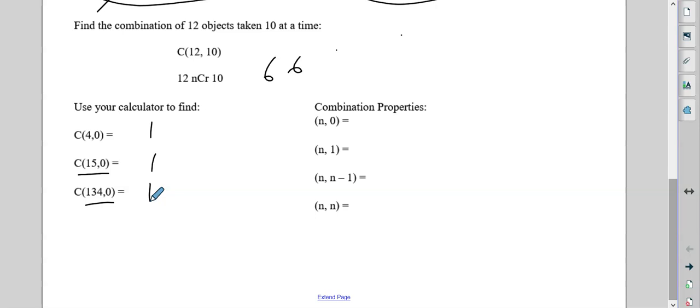So in other words, saying find a combination of four objects, 0 at a time. Well, that's just 1. There's only one way to do it. So anytime you have a number comma 0, it's going to be 1. If you have a number comma 1, it's going to be whatever that number is. So for example, 5 NCR 1 would equal 5. If it was 6 comma 1, it would be 6.